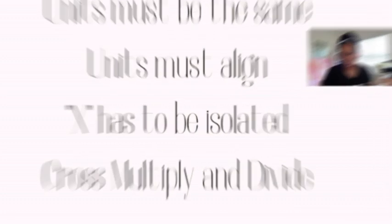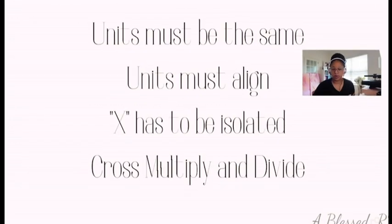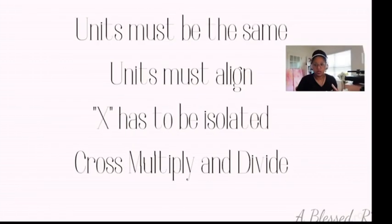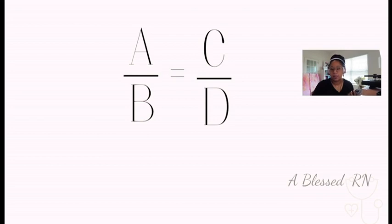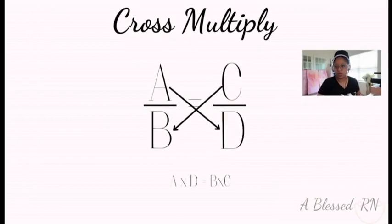X always has to be isolated. Once you cross multiply and divide, you have to do it to both sides — what you do to one side, you do to the other. We set problems up as A over B equals C over D. For example, in a heparin problem with units per milliliters, units will be A, milliliters will be B, and the other side must match: units as C over milliliters as D. Then you cross multiply A times D and B times C, and divide to find the answer.